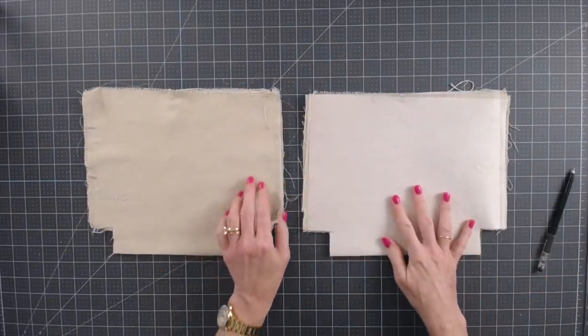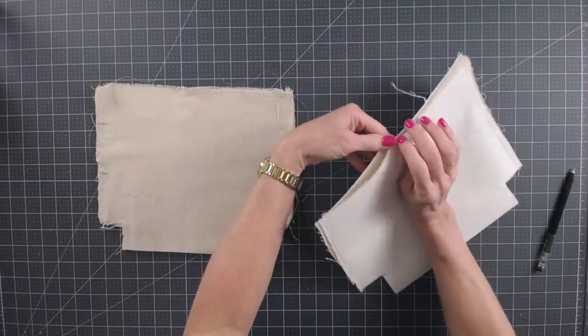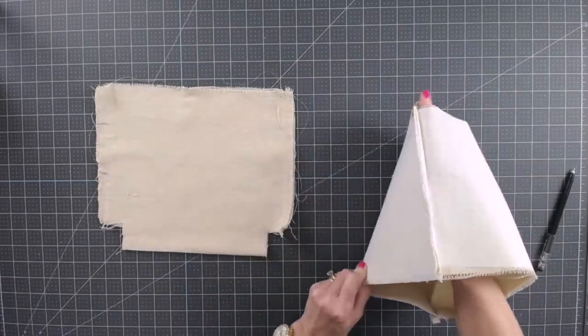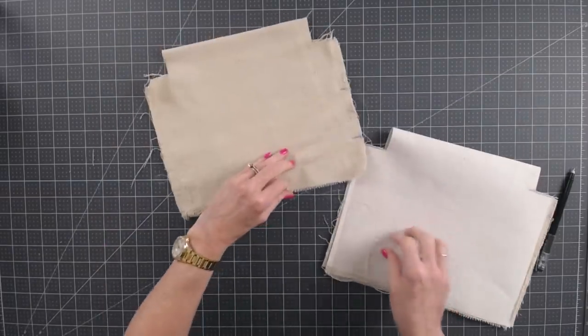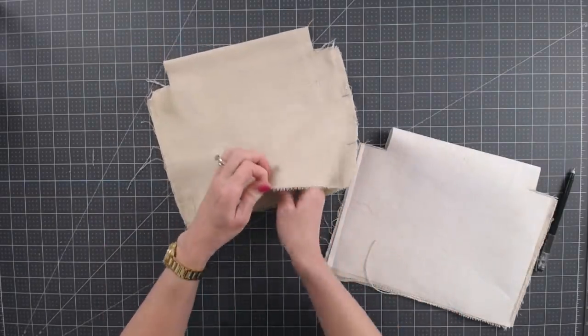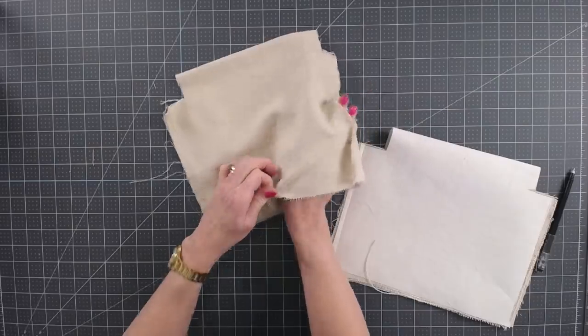So go ahead and do that and meet me back here. Okay, so we have sewn our two pieces and this one is sewn on both sides. We have the openings at the bottom, same here, except we also have this opening on the side where we didn't sew.